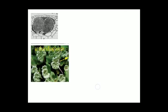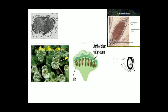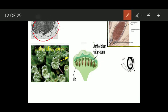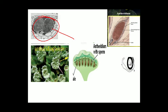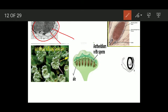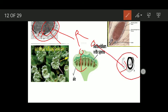Here you can see the antheridia in case of Anthoceros — they are of embedded type, present inside the chambers. You have the stalk and the body; the body comprises a mass of androgonial cells. These androgonial cells function as androcyte mother cells; each divides to form two androcytes, and each androcyte gets metamorphosed to form biflagellate antherozoids.